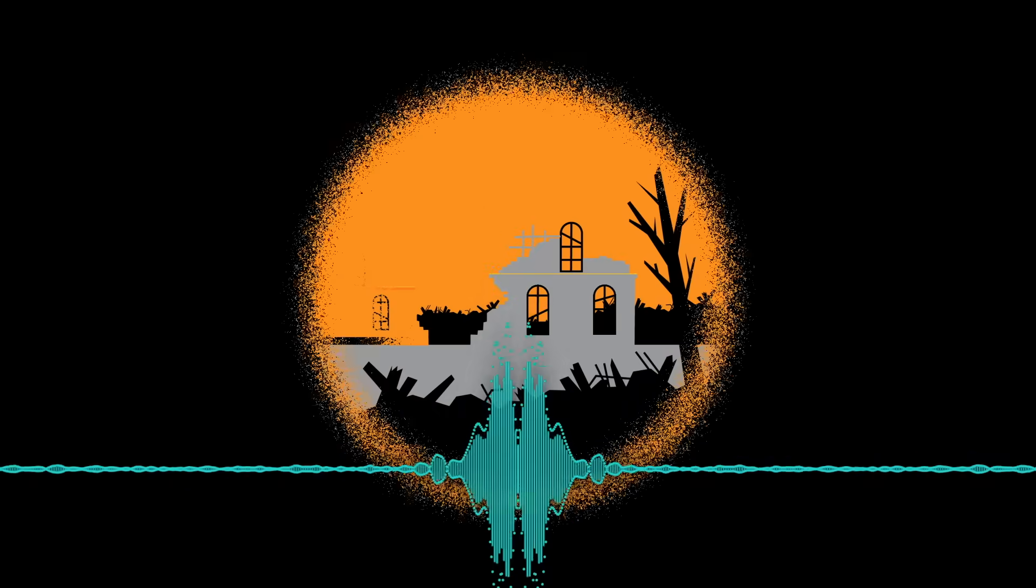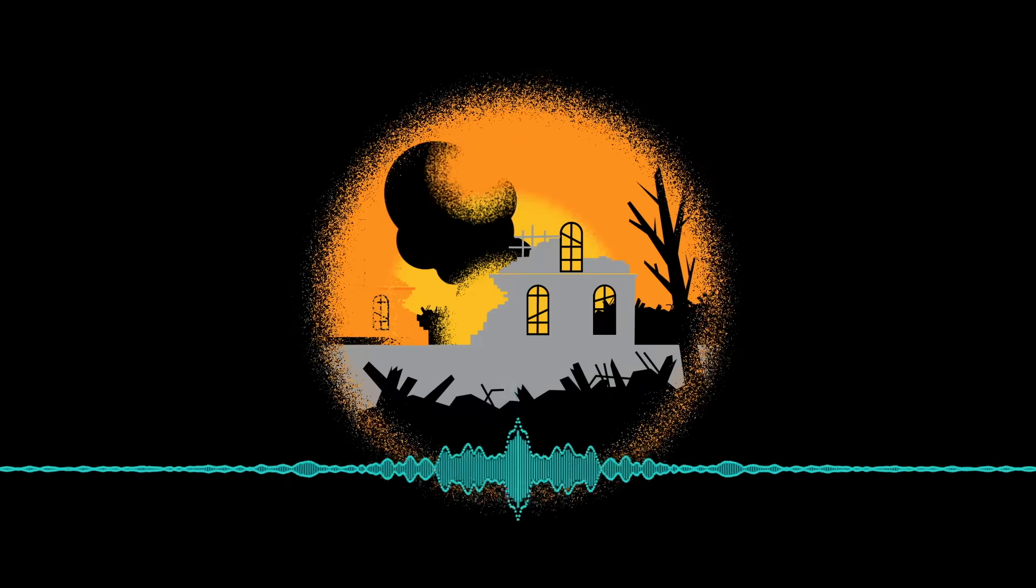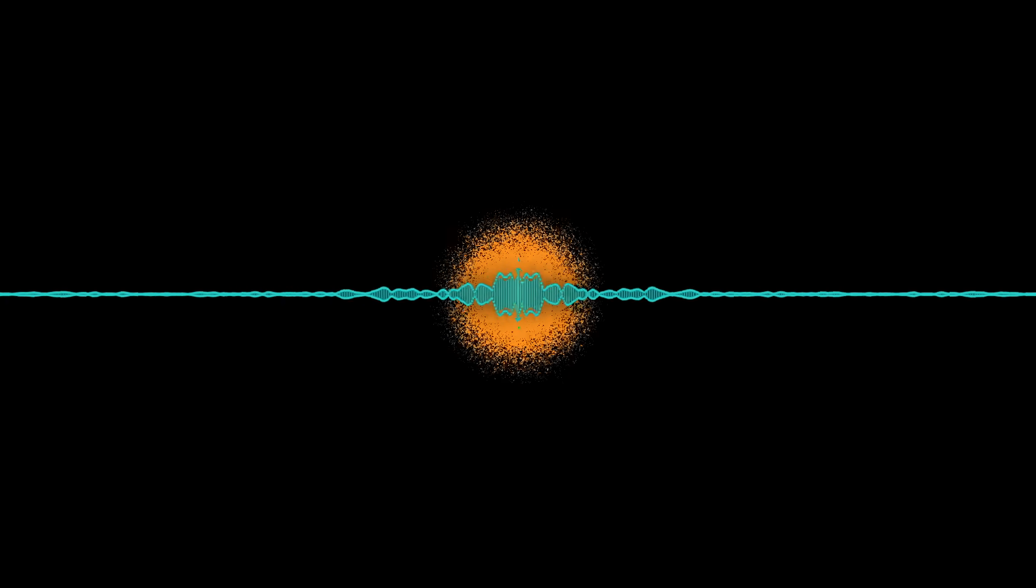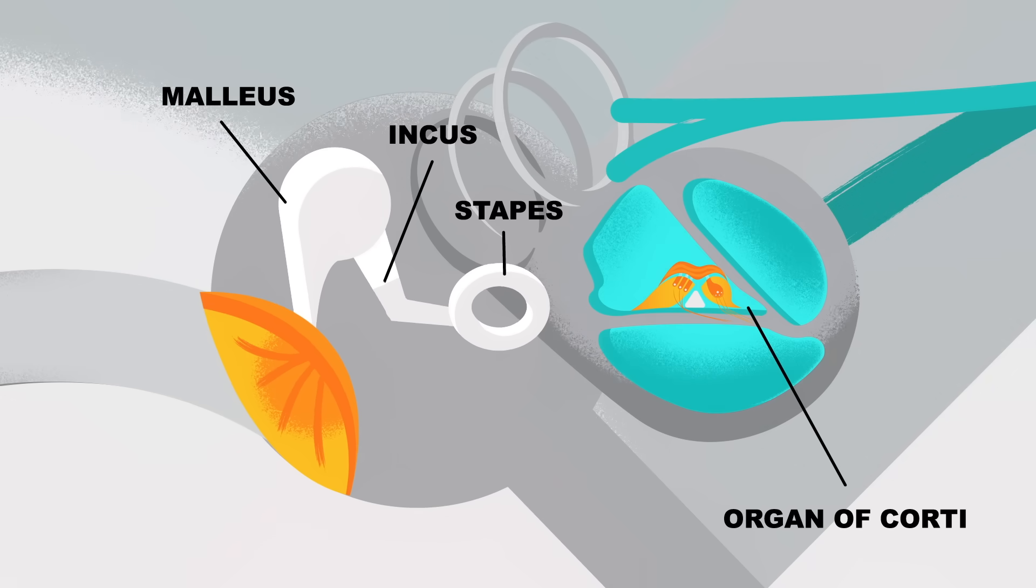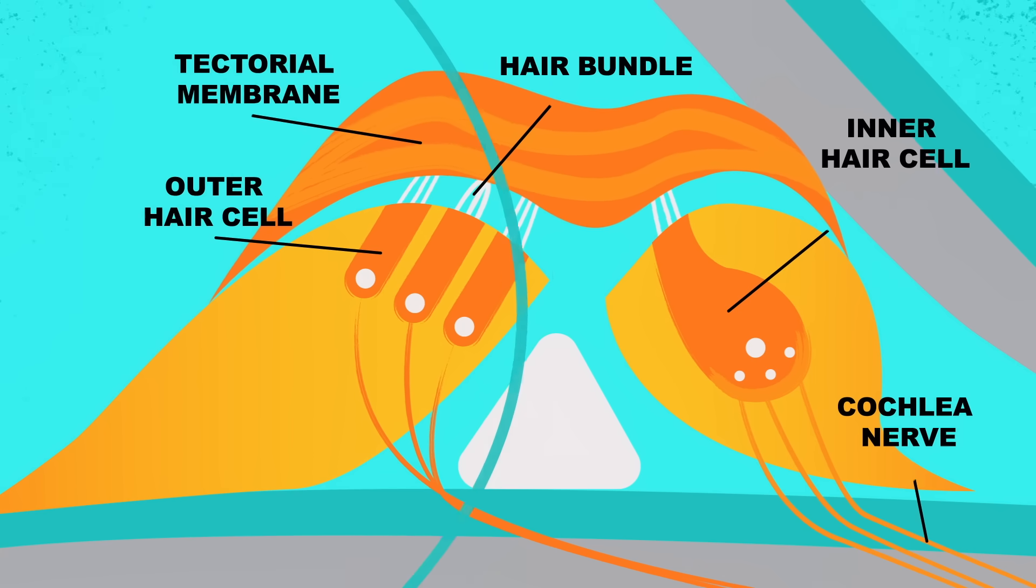Loud noises, diseases, toxins, and even natural aging can damage your cochlear cells. Some of these may heal in a matter of hours. However, if enough cells die, either over time or all at once, the auditory system becomes less sensitive.